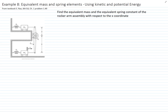Let's find the kinetic energy. The kinetic energy of the system is the sum of all the kinetic energies of each element. We will calculate the kinetic energy for mass 1, plus the kinetic energy for mass 2, and the kinetic energy of the bar.